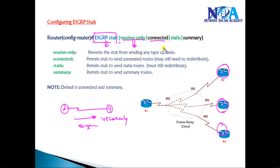If you say connected option, it will only advertise the connected interfaces. When you say static, it's going to only advertise the static routes. You can also advertise summary routes if you want to advertise only the summary routes.